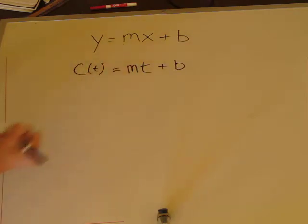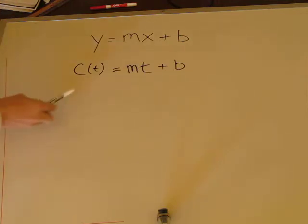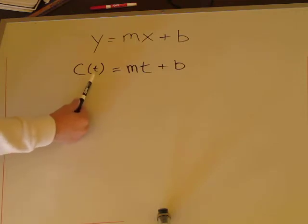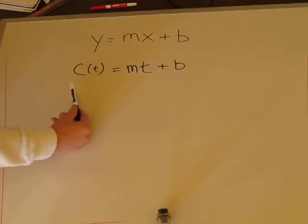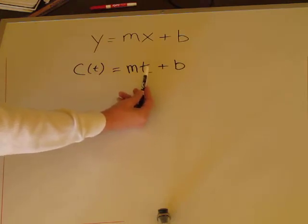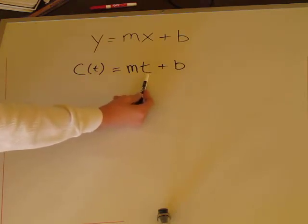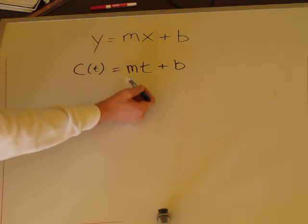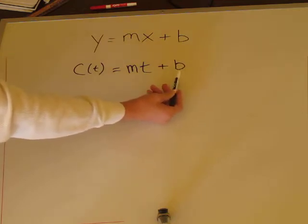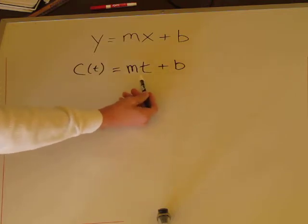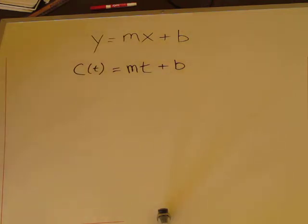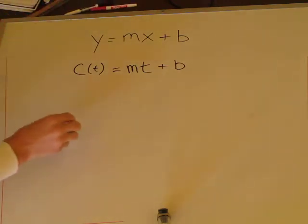We can write C as a function of time — C(t) — so this formula represents the total cost dependent on time. For example, at zero years, the slope term cancels and you're left with just b, your initial value. So after zero years for the electric system, b is $5,000. Now let's create the formulas for each system.